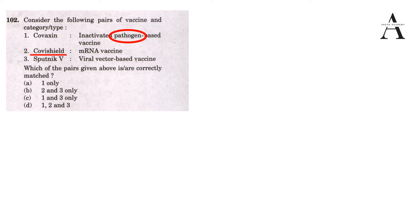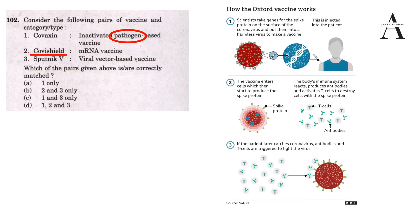Now let's look at how Covishield works. Covishield is based on a viral vector-based vaccine. The third option given as a match for Sputnik is actually correct for Covishield. What is the meaning of vector here? A vector is basically a carrier - like how a mosquito is a carrier for malaria disease.